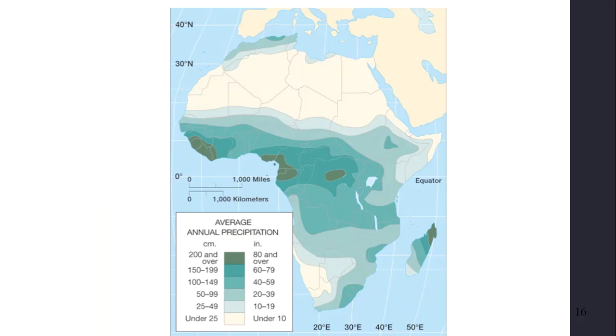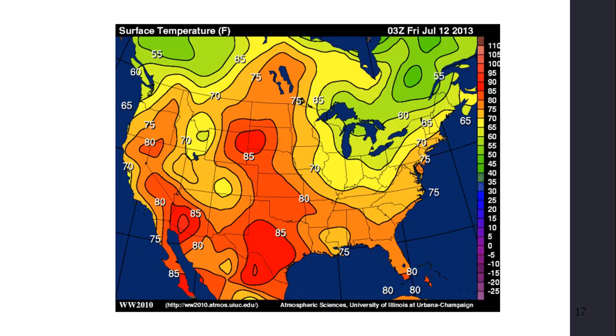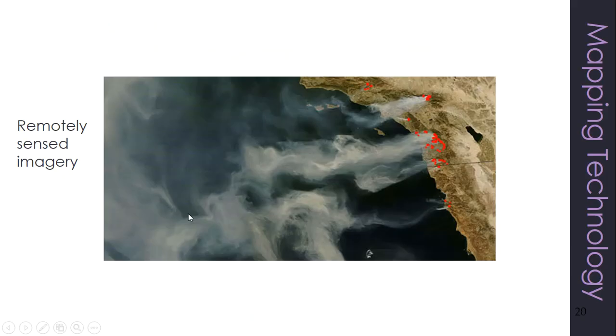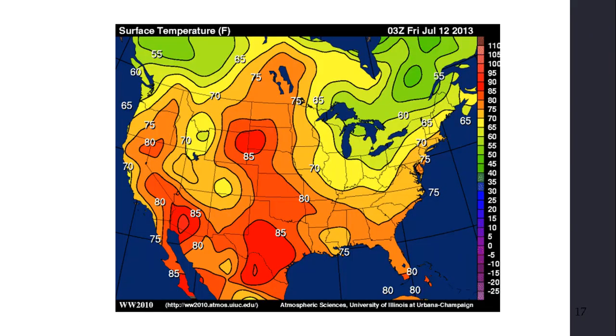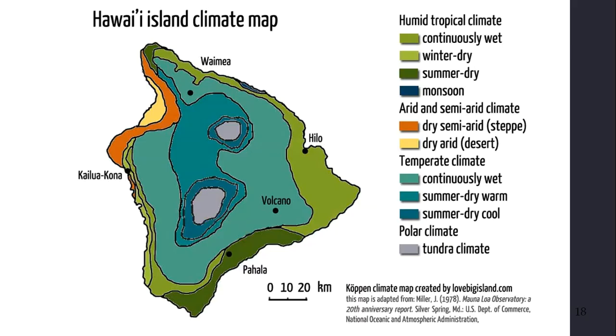So here's another example of an ISO line map. This is average annual precipitation in Africa. Here is surface temperature in the United States for Friday, July 12th of 2013. So it's not that everything in here is 85 degrees. It's not that everything in there is 85 degrees. It's everything on that line is 85 degrees. To one way is higher, to one way is lower.